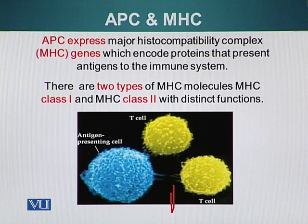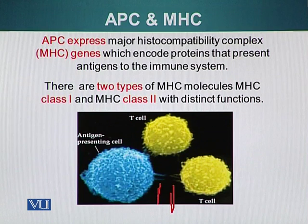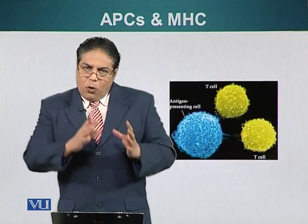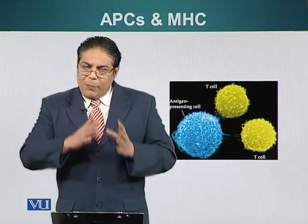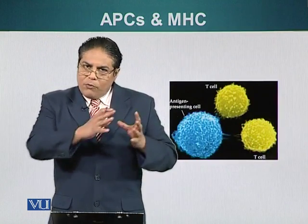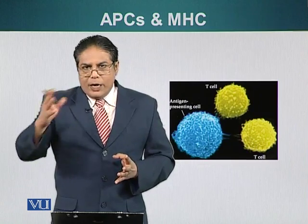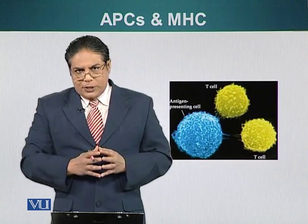The antigen-presenting cell has MHC molecules displaying fragments that are foreign in origin or from a pathogen, and here is the TCR. So here, the torch is being passed on from the innate immune system to the adaptive immune system.